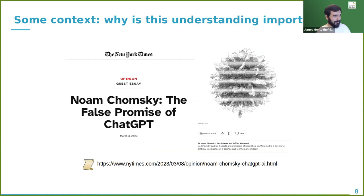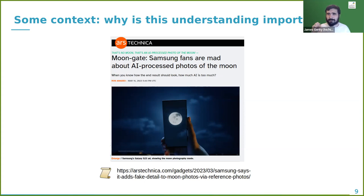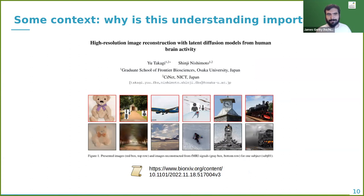Samsung was found to be using AI in their moon photography mode to insert already-stored nice moon images rather than actually showing the picture you took. There's also a cool paper using latent diffusion to generate images from human brain signals — showing what's inside a person's head. This is all context for what it's going to be like to live in a world with lots of these models floating around.